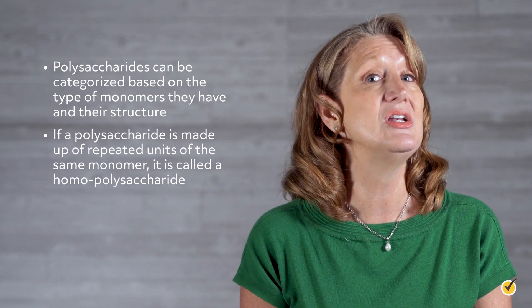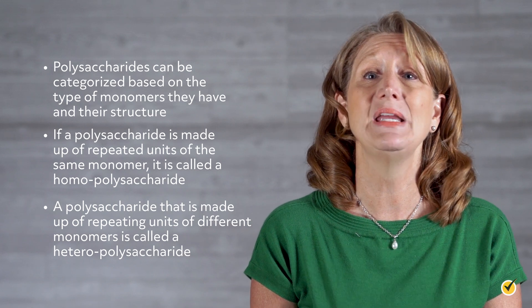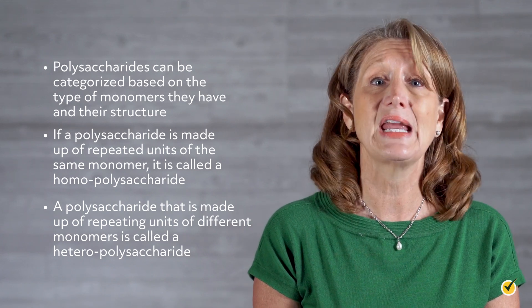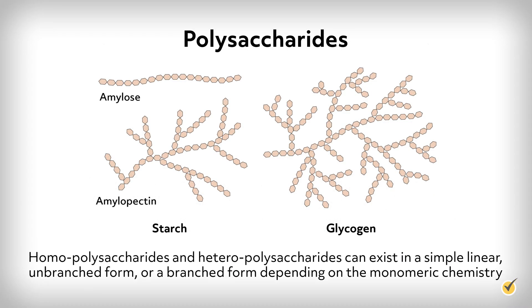Polysaccharides can be categorized based on the type of monomers they have and their structure. If a polysaccharide is made up of repeated units of the same monomer, it is called a homopolysaccharide. Contrastingly, a polysaccharide made up of repeating units of different monomers is called a heteropolysaccharide. Homopolysaccharides and heteropolysaccharides can exist in a simple, linear, unbranched form, or a branched form, depending on the monomeric chemistry.